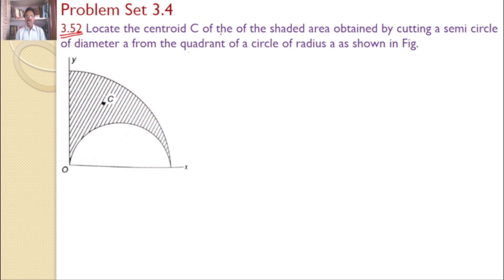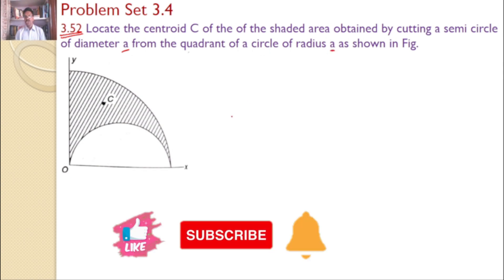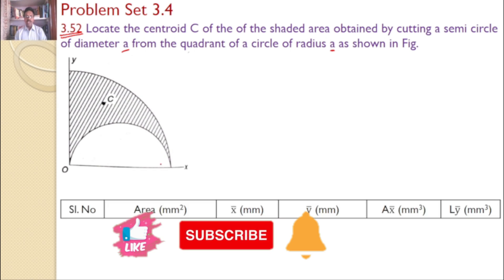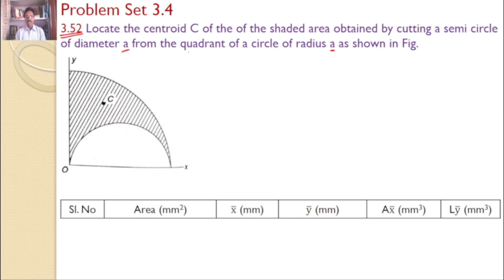Locate the centroid C of the shaded area obtained by cutting a semicircle of diameter A from the quadrant of a circle of radius A as shown in the figure. Our interest is to find the centroid for the shaded area. To find it, we will divide this into two regular areas: a quarter circle of radius A minus a semicircle of diameter A.